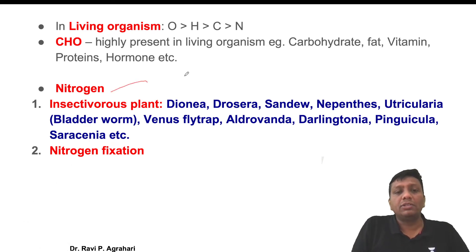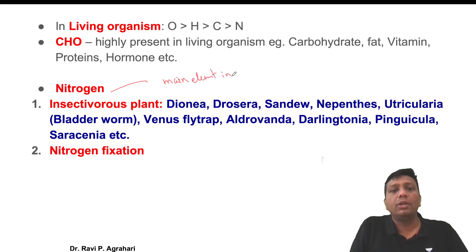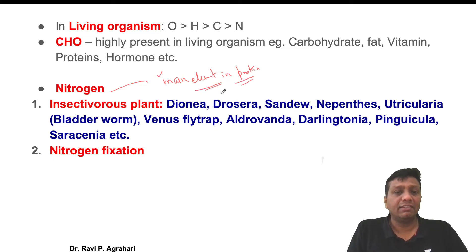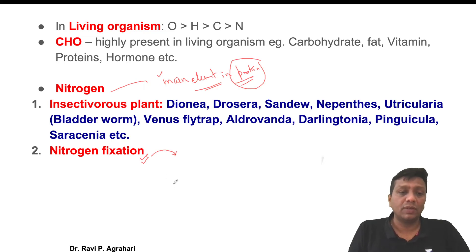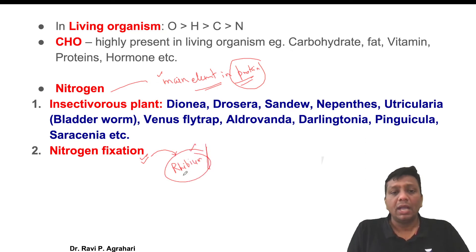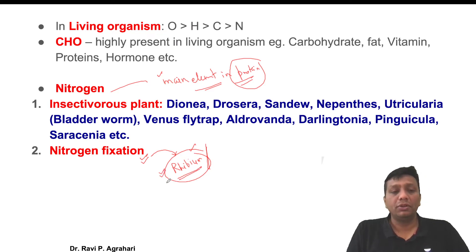Nitrogen is the main element in protein compounds - it is the chief element in protein. In the case of pulses crops, nitrogen fixation is very important because pulses have protein containing nitrogen. Various bacteria in the soil perform nitrogen fixation in plant roots. The main important bacterium doing nitrogen fixation is Rhizobium. Rhizobium is present in the soil, but it enters plant roots and forms root nodules.